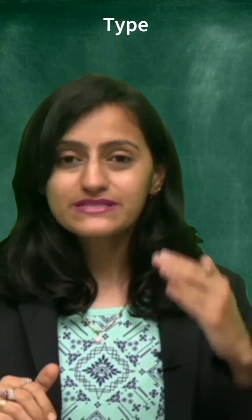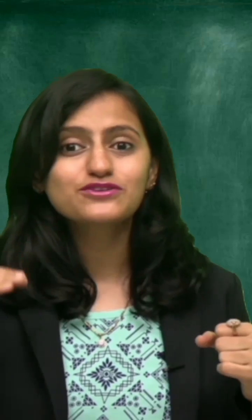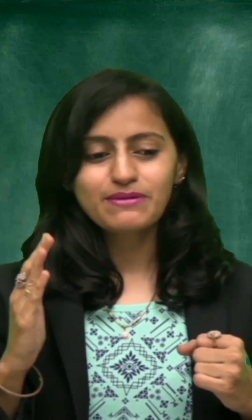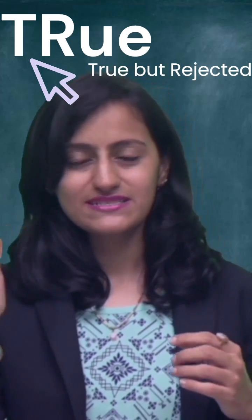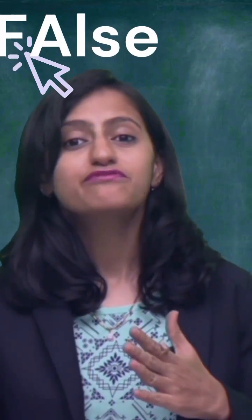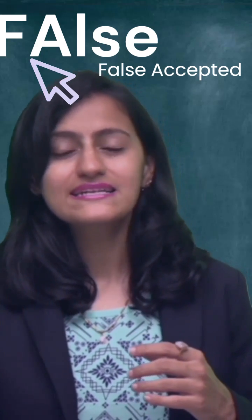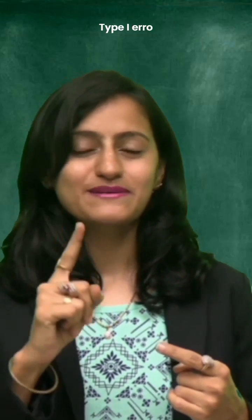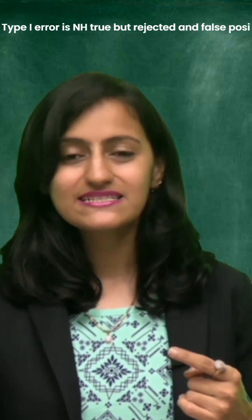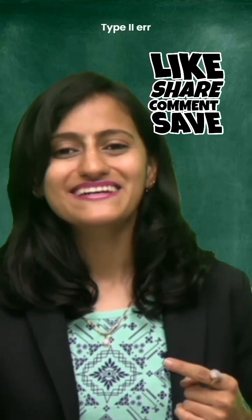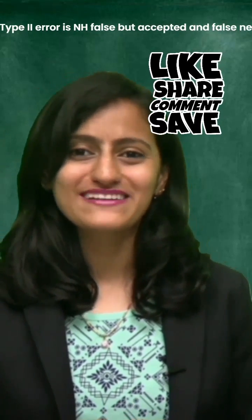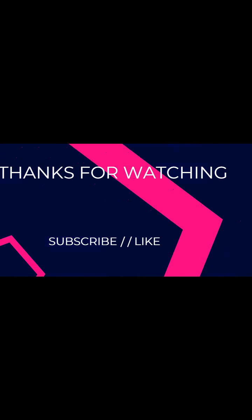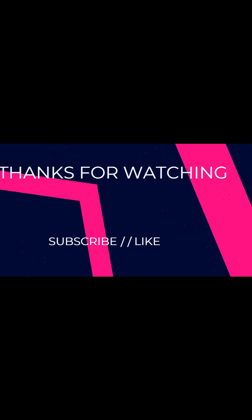Single horizontal line — Type 1 is true. Two horizontal lines — Type 2 is false. Now, Type 1: the null hypothesis is true but rejected. Remember 'TR' — the first two letters of 'true' stand for true but rejected. Type 2: the first two letters 'FA' of 'false' stand for false but accepted. So summarizing: Type 1 error is true but rejected, Type 2 error is false but accepted.